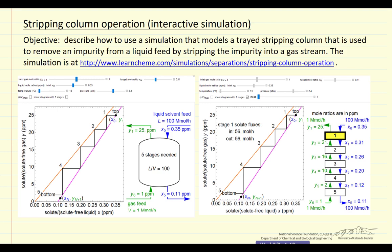I'm going to describe an interactive simulation that models a stripping column. It plots the mole ratio on the y-axis for the gas phase and on the x-axis for the liquid phase, and then it's counting off the stages where we start with the mole fraction coming in the liquid phase. We'd like to decrease the solute in the liquid phase by transferring that solute to the gas phase.